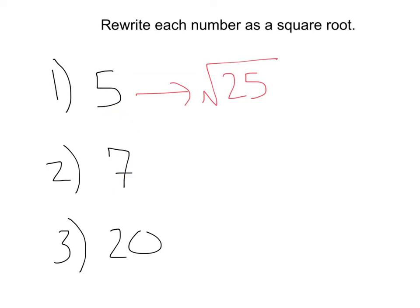Let's go ahead and do 7 now. 7 we could rewrite as the square root of 49, because the square root of 49 is equal to 7. Same value, but just written as a square root.